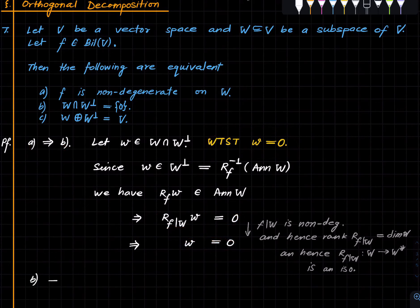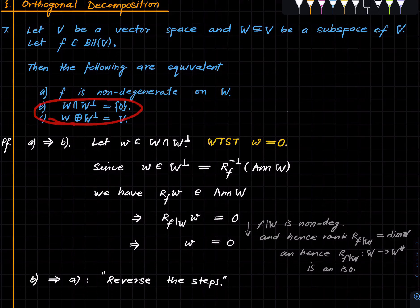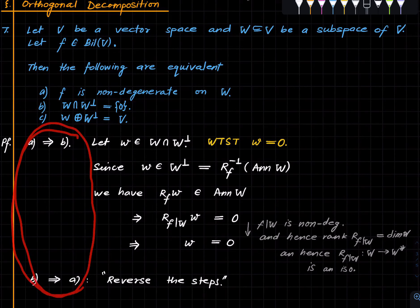B implies A is just reverse the above reasoning. I leave this as an exercise. Now let us show that B is equivalent to C, which will finish the proof.